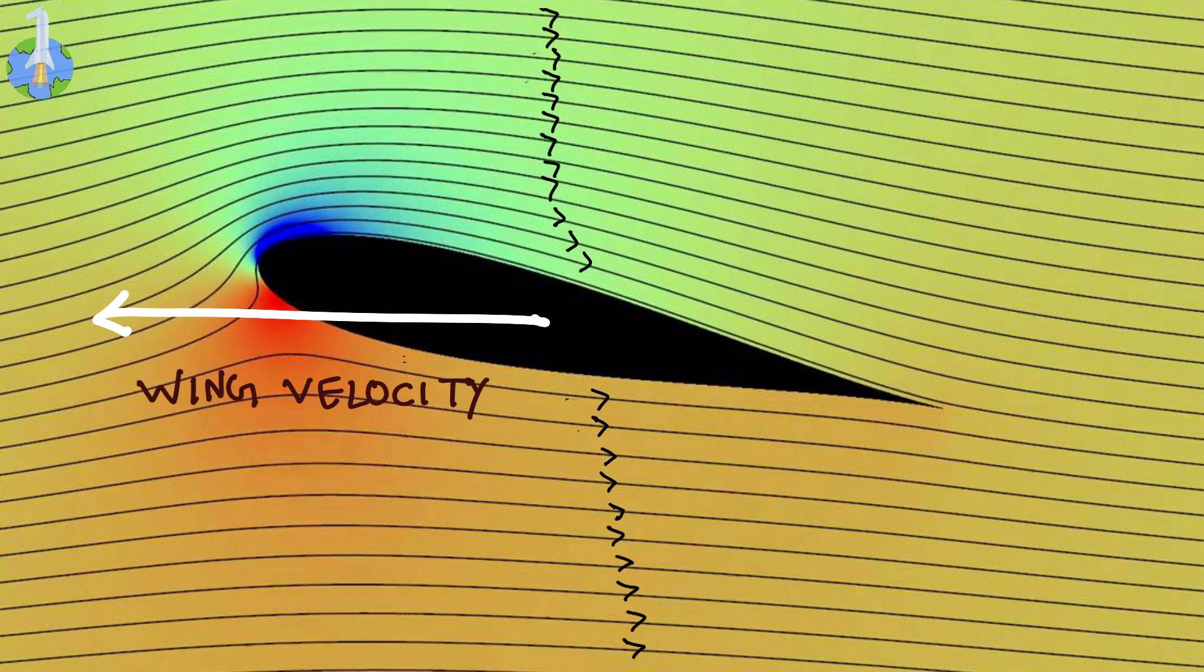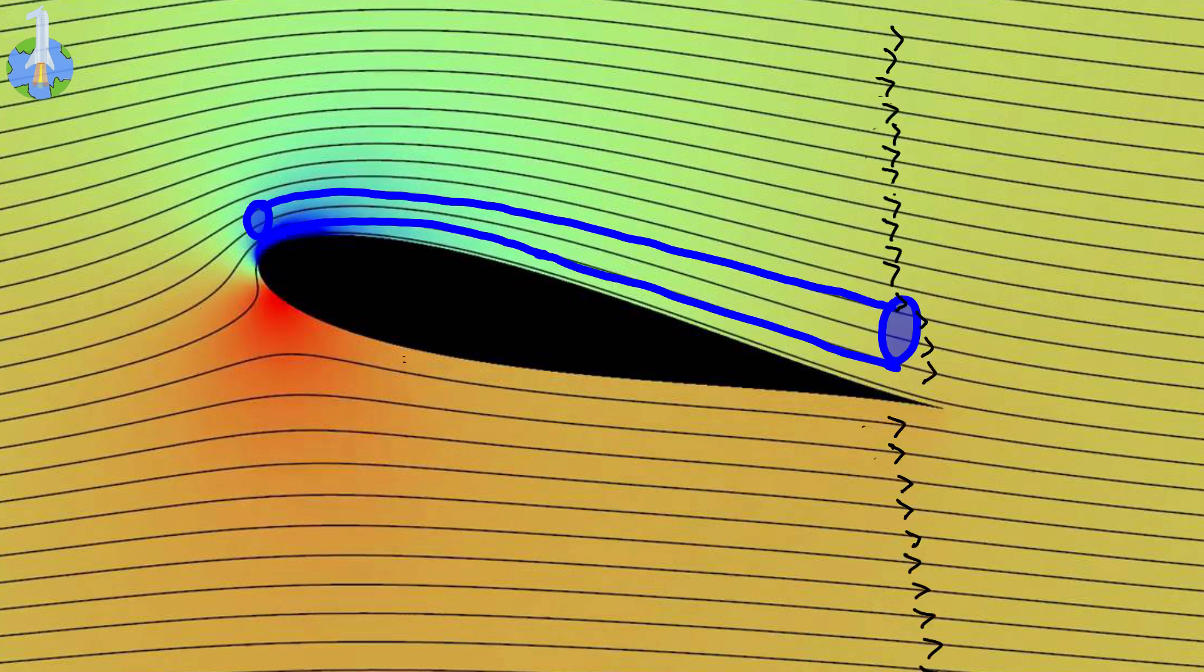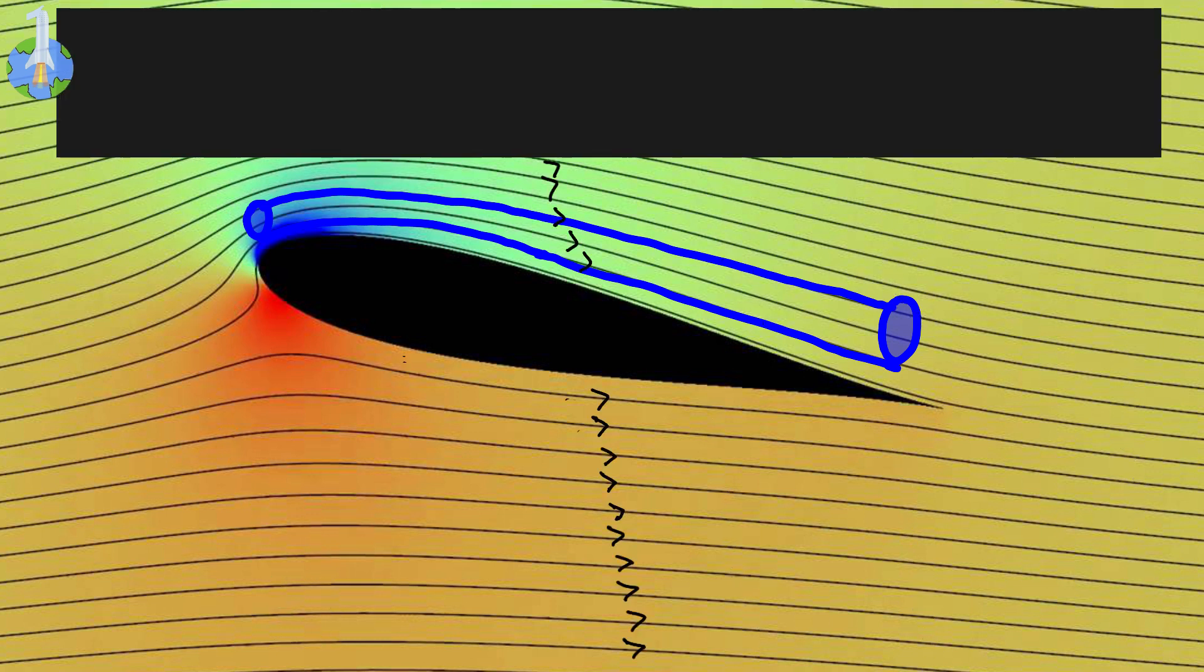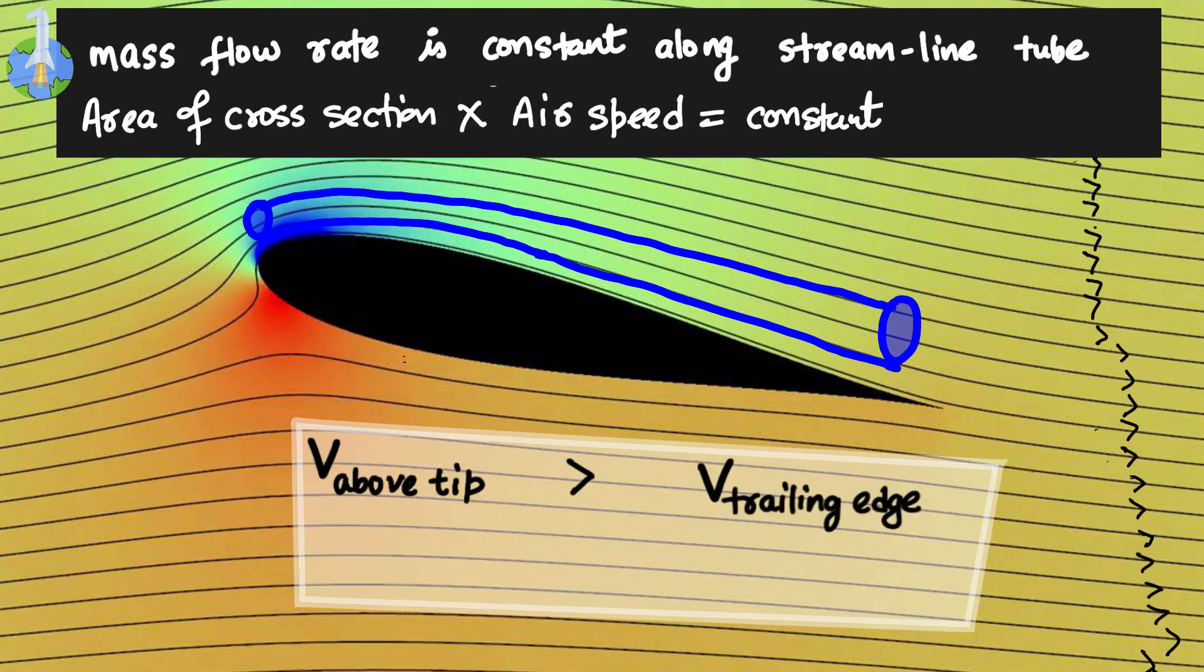This is the representation of air streamlines surrounding the wing. The tip of the wing compresses the air more on the top than they do on the bottom, causing the air on the top of the wing to be denser. Consider an imaginary streamline tube above the wing. To maintain the same mass flow rate, speed of air above the tip must be higher than the trailing edge of the wing because the area of the tube at the tip is lower than that of the trailing edge.